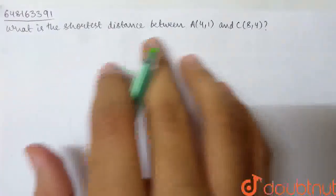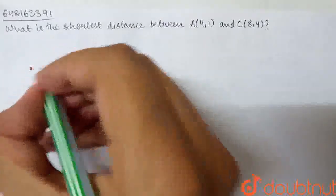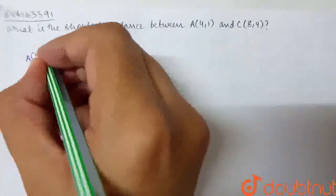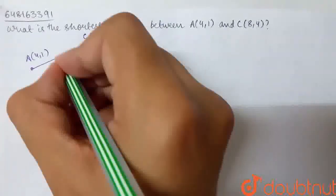This question is, what is the shortest distance between A and C? A and C are two points given. So let's suppose these are two points. A given is 4,1 and C given is 8,4. We will find out the shortest distance between A and C.